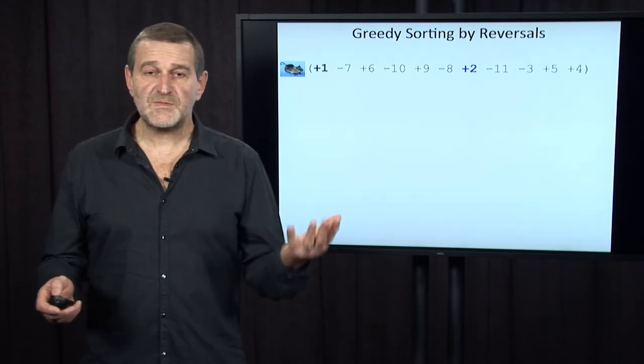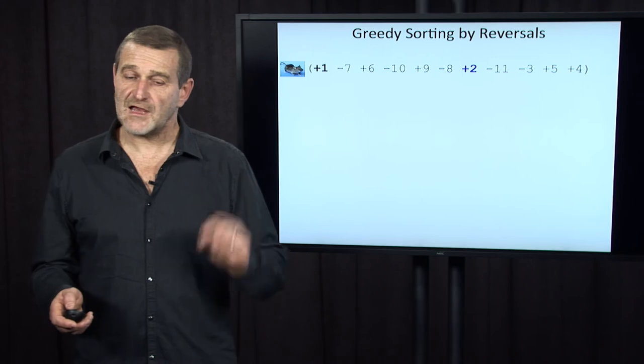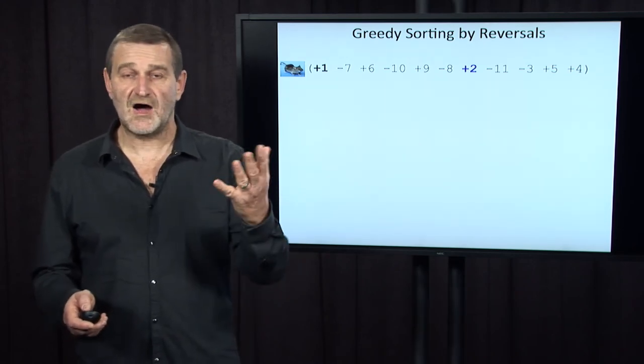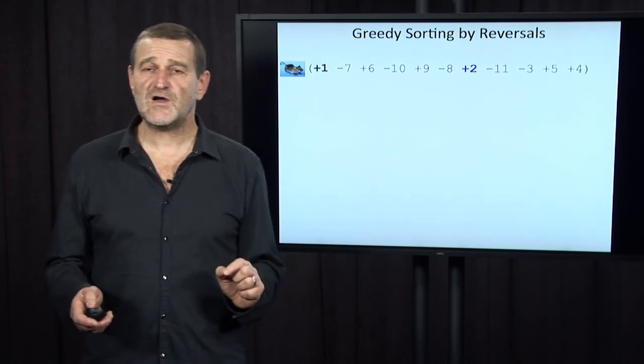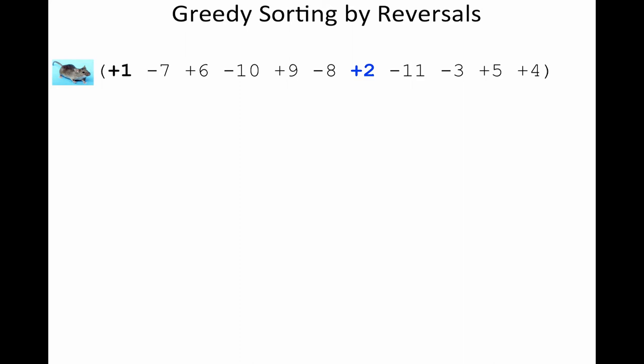Now, what would be the most natural algorithm for sorting by reversal? I'm not saying good algorithm, but the most natural one. Let's look at this mouse permutation for X chromosome in this case. Plus one is already at the right position in this permutation, but plus two is not. However, we can use a reversal shown in bold here to bring plus two at the right position. That's what we've done right here.